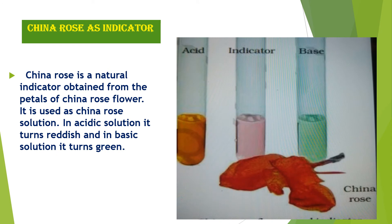Next is china rose as an indicator. China rose is hibiscus. It is a natural indicator obtained from the petals of the china rose flower. It is used as a solution. In acidic solution it turns reddish, and in basic solution it turns green in color. This is very clear in the picture.